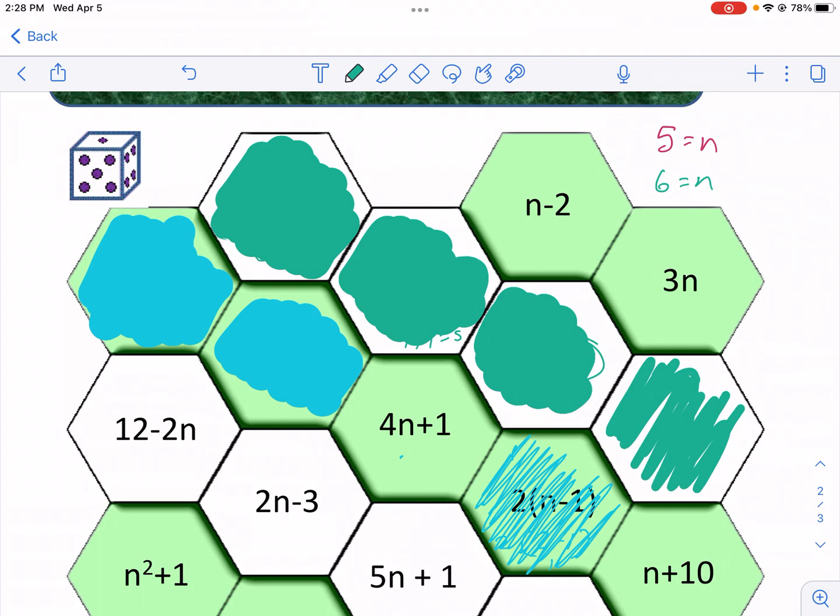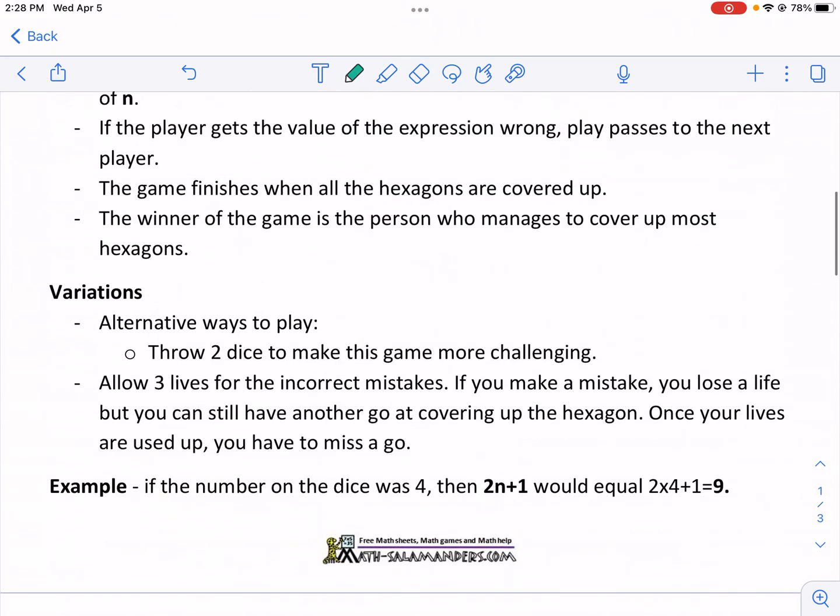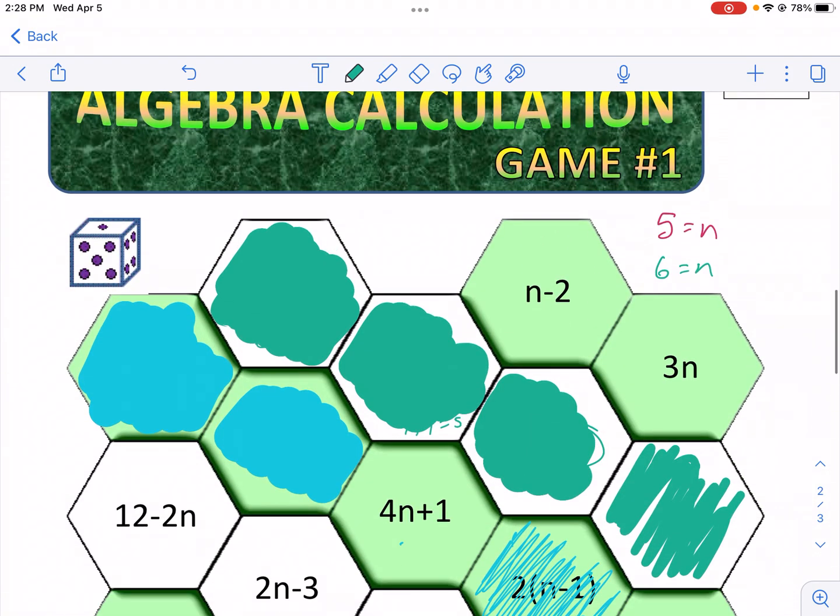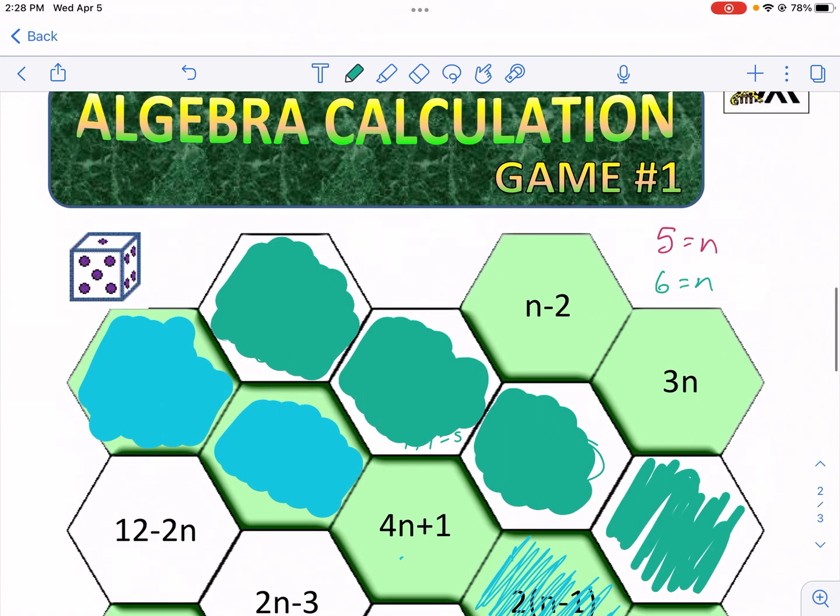So you can either do once all the hexes are covered, you see who has the most. You can do four in a row. There's all different types of variations and some of them are listed here.